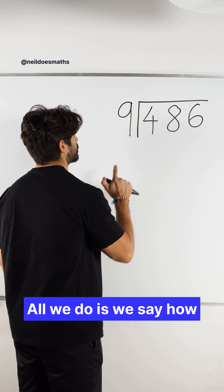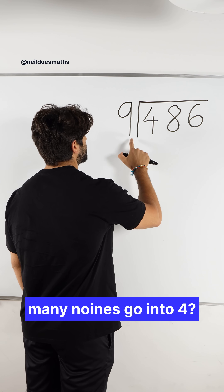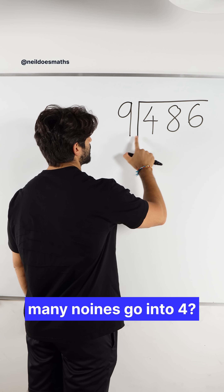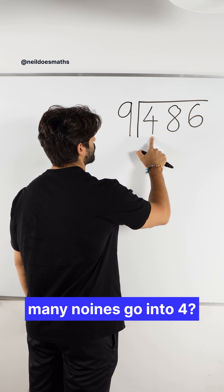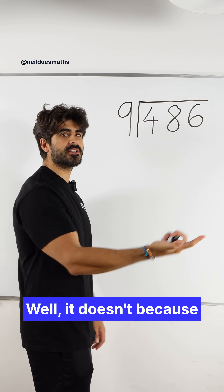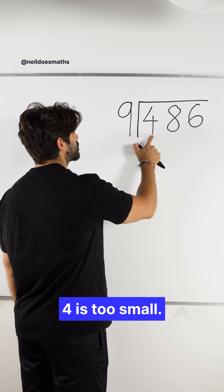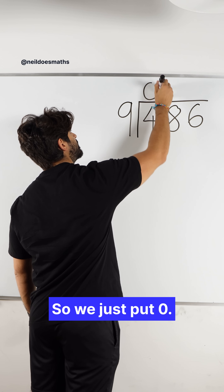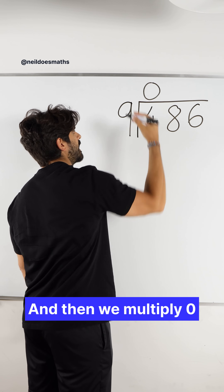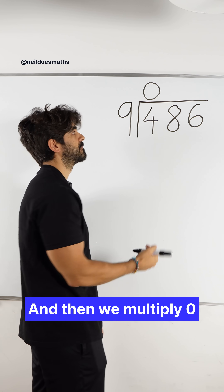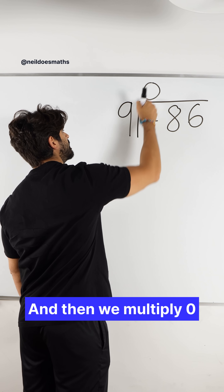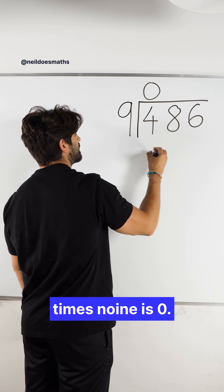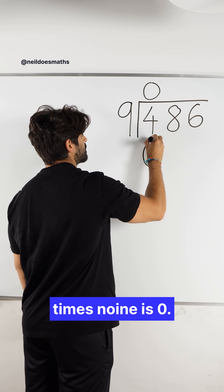All we do is we say how many nines go into four. Well, it doesn't because four is too small. So we just put zero, and then we multiply.